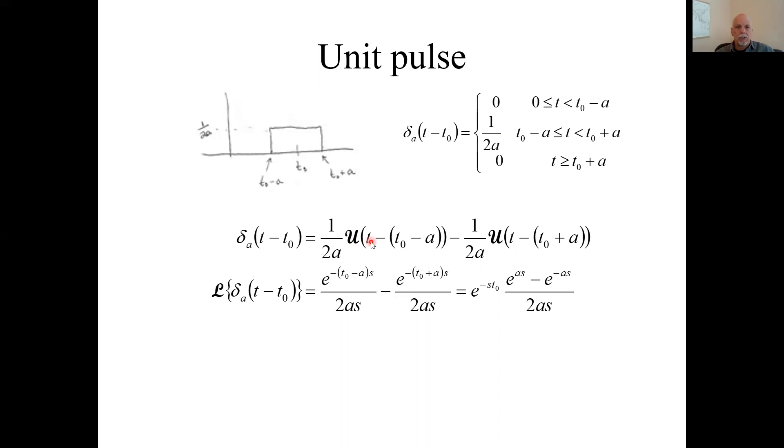So the start time is T minus where it starts, T zero minus A. The stop time is T minus T zero plus A. That's how we write it as a time function. Then we can take the Laplace transform because we have Laplace transforms for unit steps. It's E to the minus whatever this argument is, in this case T zero minus A times S over 1 over S, and we've got the one over 2A up front. So there's the first piece, here's the second piece. We can factor out an E to the minus T zero S. There is our Laplace transform of this unit pulse.